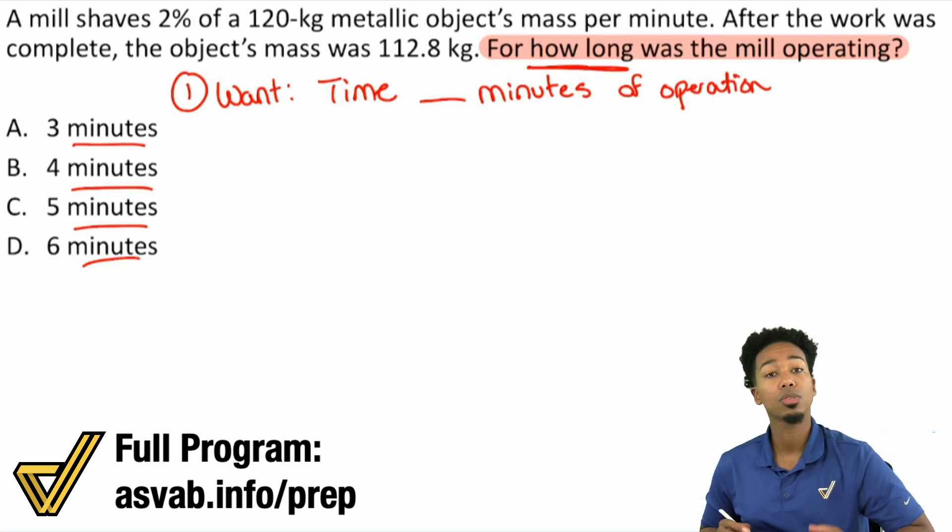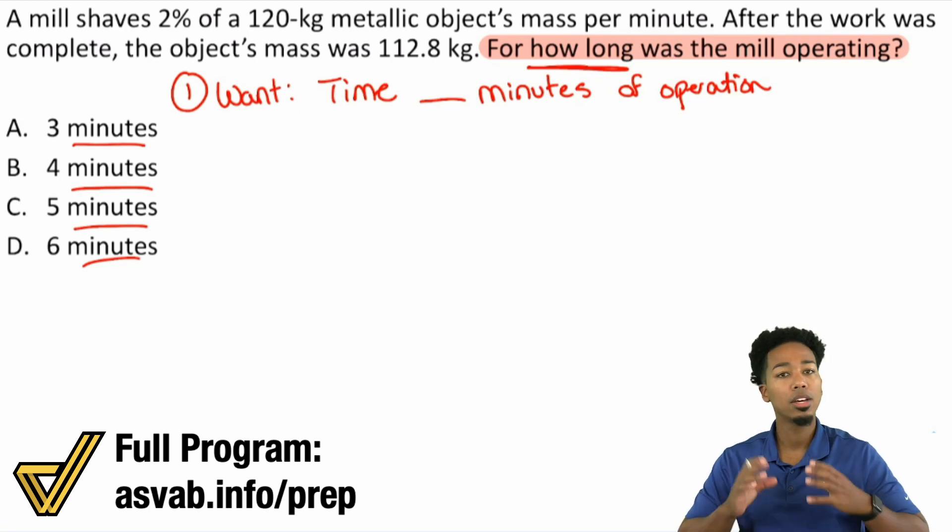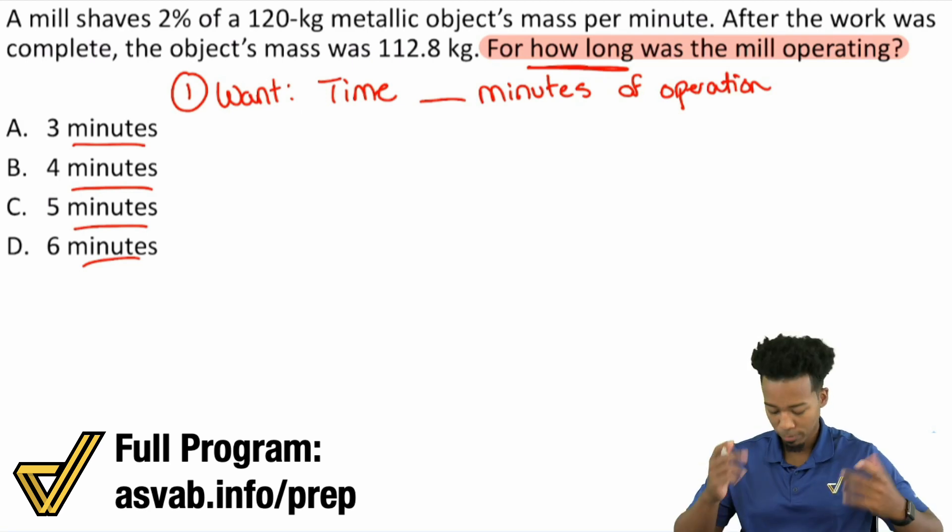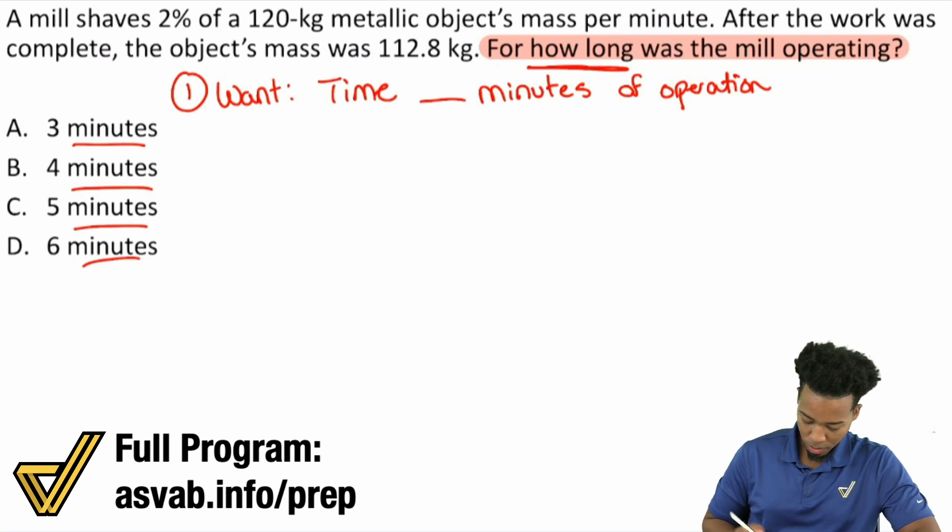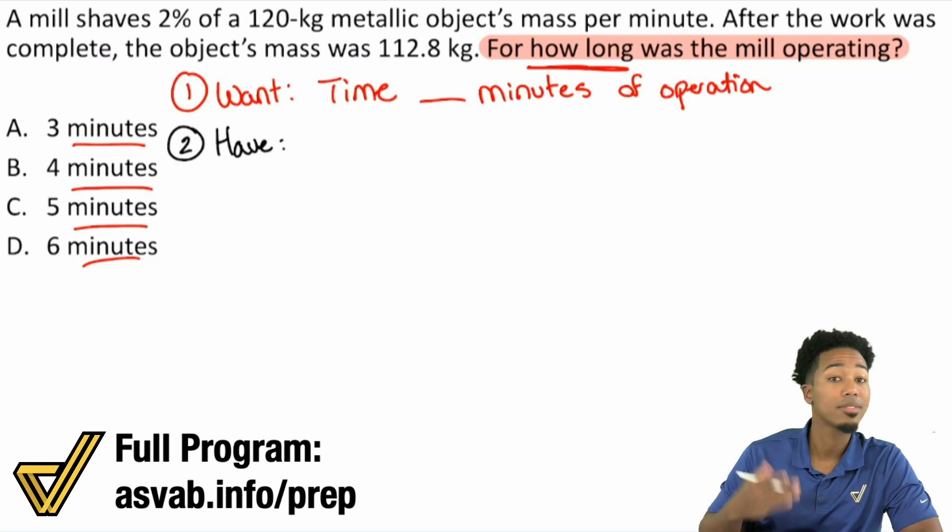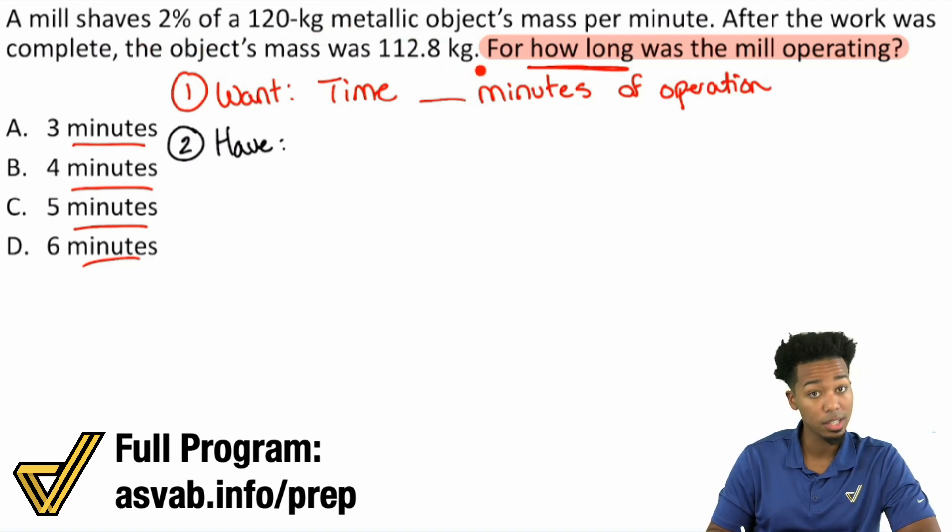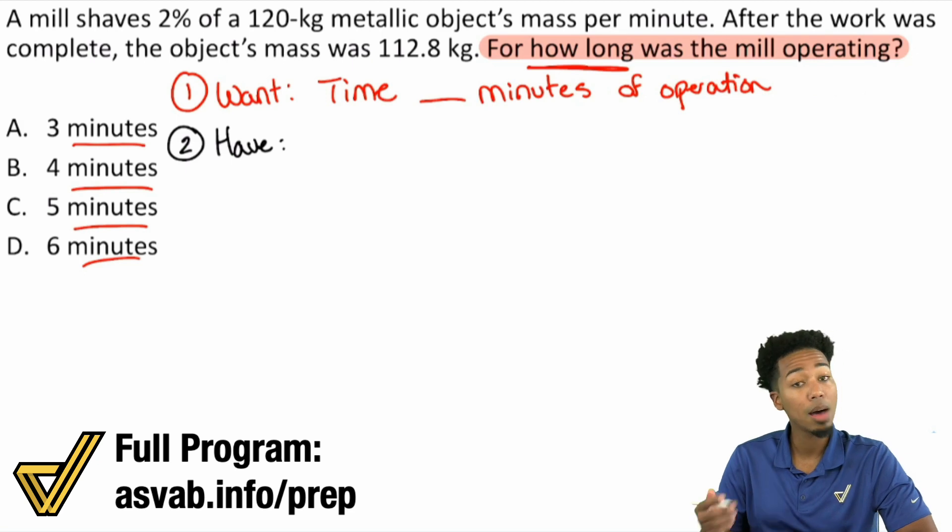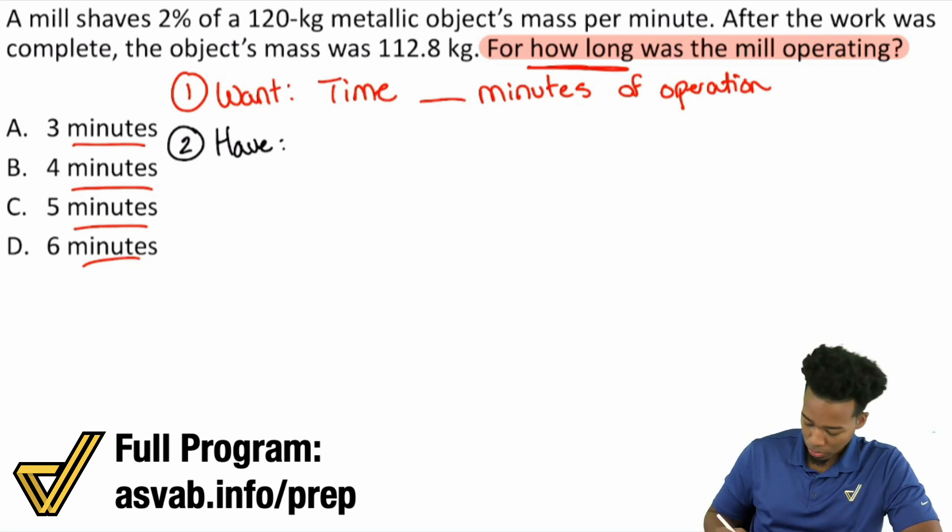So the next thing we're going to do is we're going to go ahead and take in all the information. As confusing as it might be, we're going to take it in and understand any relationships that we can form here. So here we go. Number two, right over here, what do we have? Again, what do we want? What do we have? And what's the connection? So let's go ahead and write all of that down. Let's see what we can understand from that.